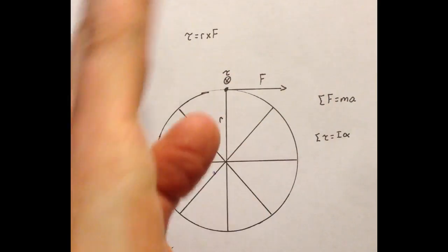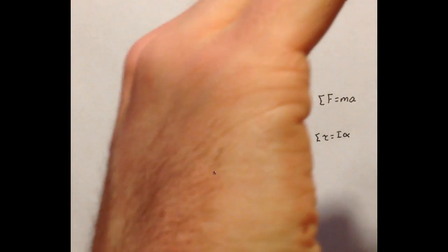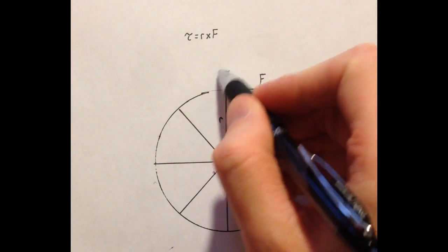The force is going that way. Notice f. So I curl them towards the force, stick out my thumb. Notice my thumb is pointing down into the page.